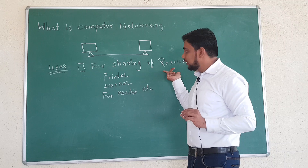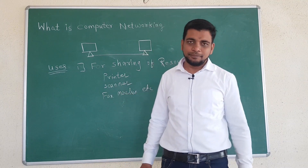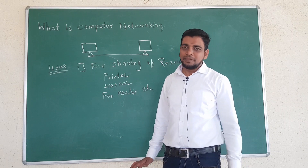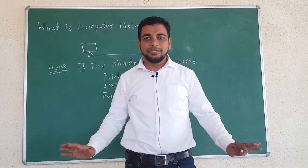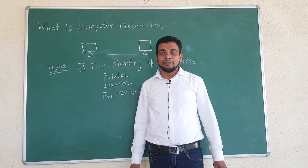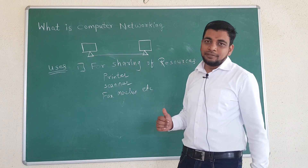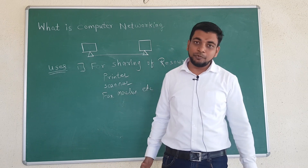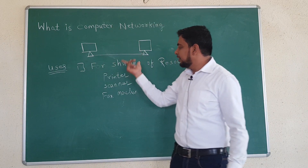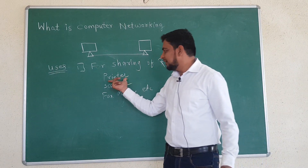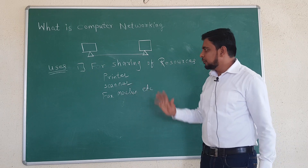Why share the resources? Suppose in an organization 20 employees are there and one computer is given to each employee — that is 20 computers are assigned. When computer network is not there, they are not able to share their information with each other. Suppose they want to share a printer: without a network, there must be a separate printer for every employee — 20 employees, 20 printers required. But if you are using a computer network and a printer is shared on the network, then a single printer is sufficient to take the print from all 20 computers. This is the use of a computer network — all resources can be shared.